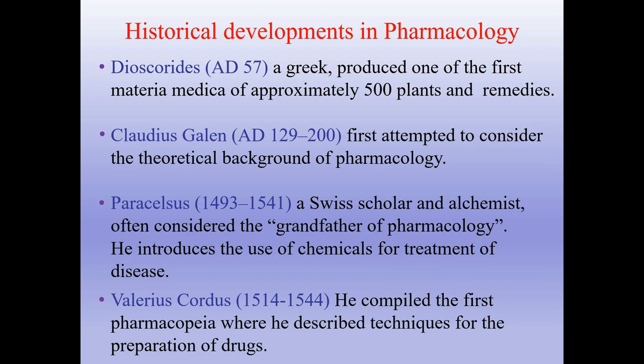Dioscorides, a Greek, produced one of the first materia medica of approximately 500 plants and remedies. Claudius Galen first attempted to consider the theoretical background of pharmacology. Paracelsus, a Swiss scholar and alchemist, is often considered the grandfather of pharmacology — he introduced the use of chemicals for treatment of disease. Valerius Cordus compiled the first pharmacopoeia, where he described techniques for the preparation of drugs.